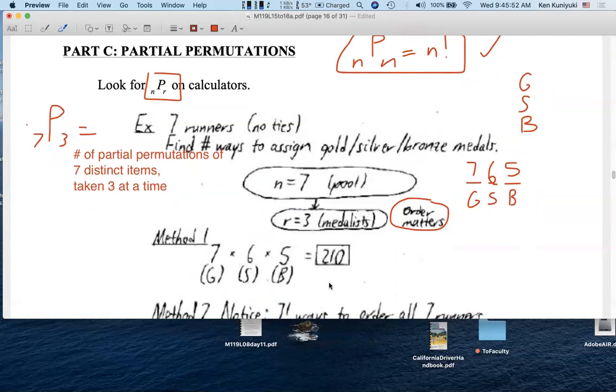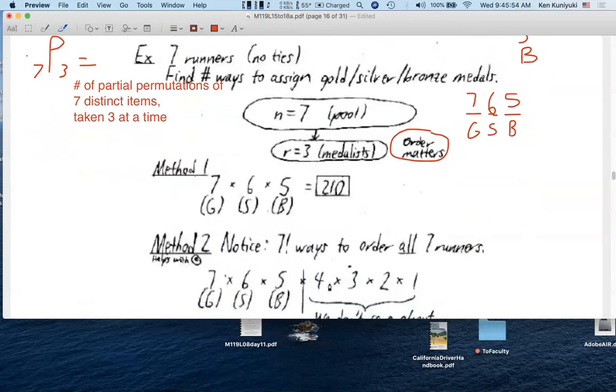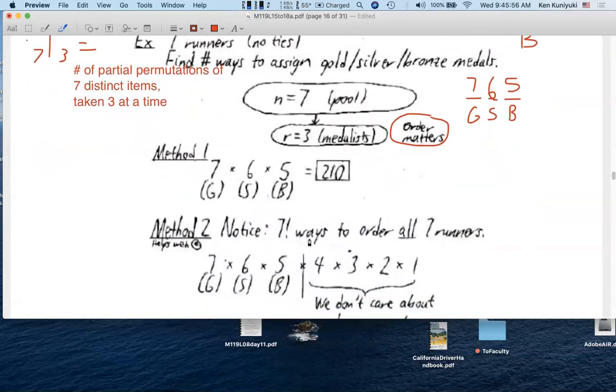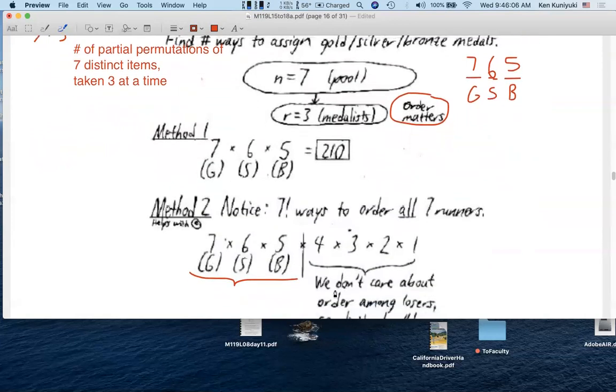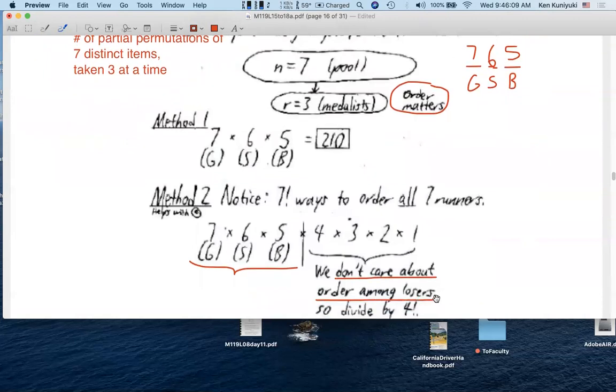Or another way to look at it, if you consider all seven factorial ways to order all seven runners, there's a dividing line. Line them up in order. We care about the order among the three winners, but we don't care about the order among the four losers.